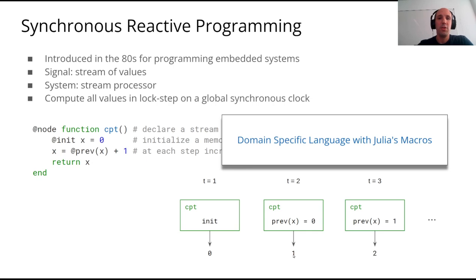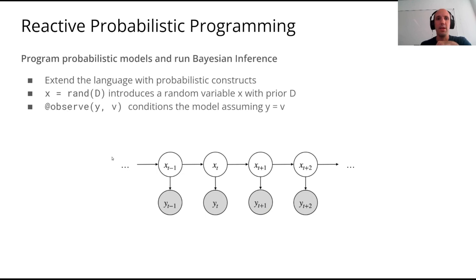What we built is a domain-specific language with Julia macros. There are three macros: node, init, and prev, which are straightforward and we will discuss them a little bit more in this talk.